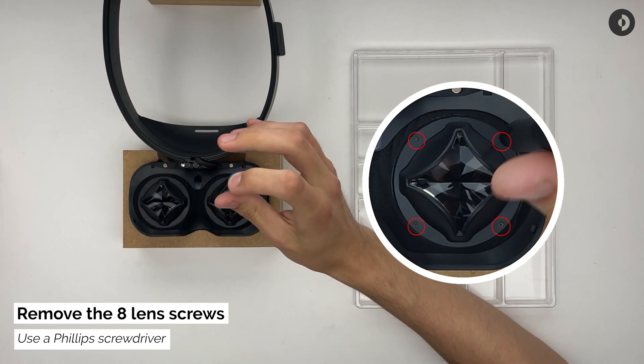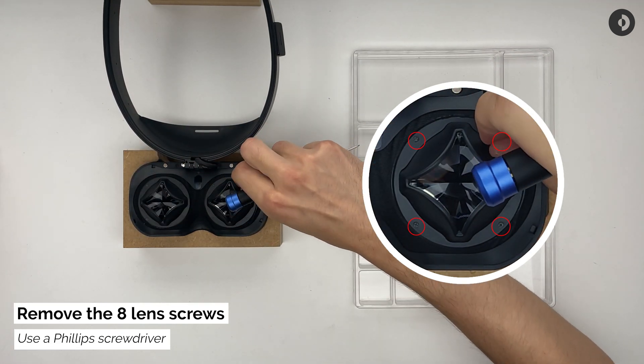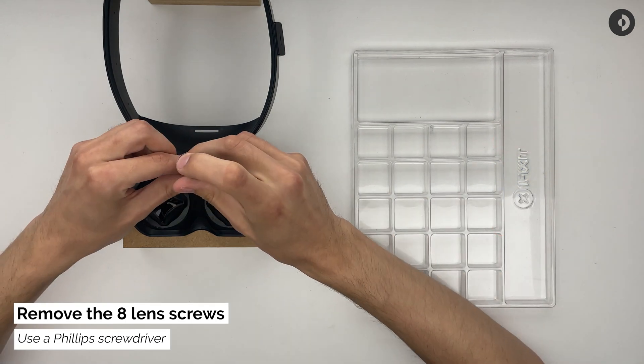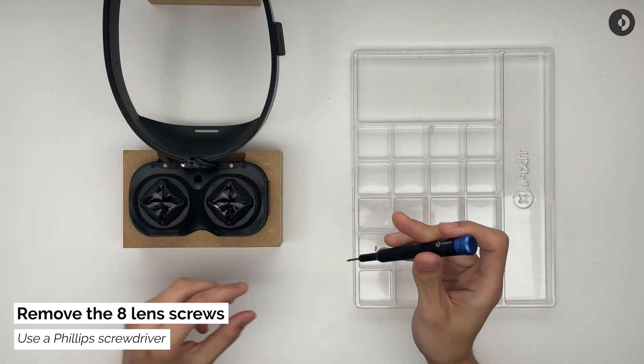With a small Phillips screwdriver, remove all screws surrounding the lenses. In total there are 8, 4 per optical block.